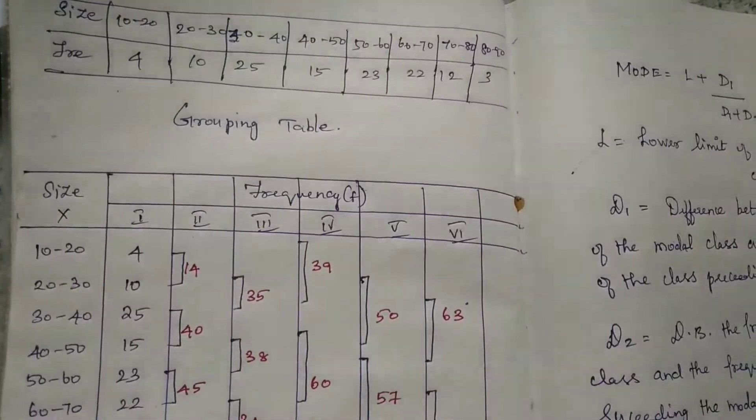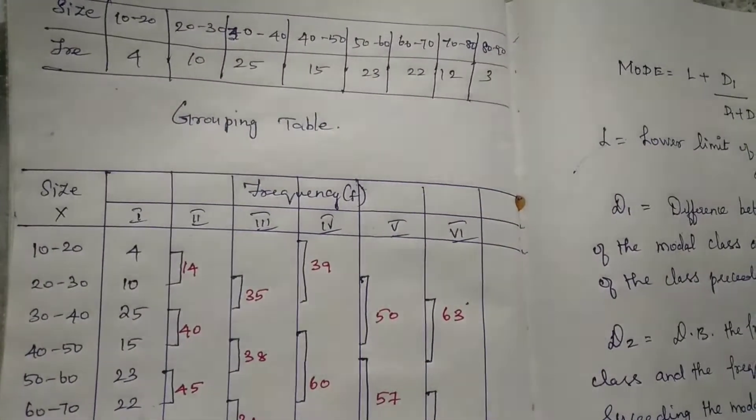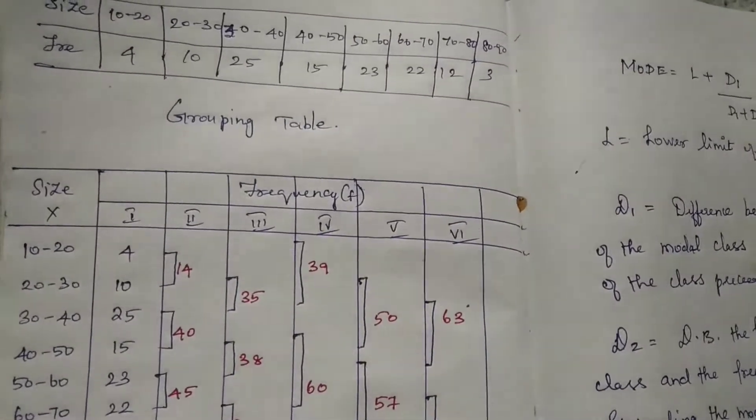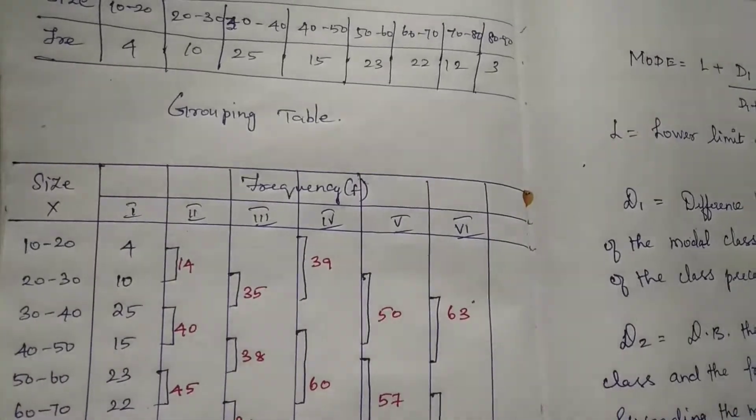Hi everyone, welcome to DD Economics Tutor. In this video we are going to learn about Class 11 CBSE Statistics for Economics, fifth chapter: Measures of Central Tendency - Mode, using grouping table and analysis table with the help of this data.